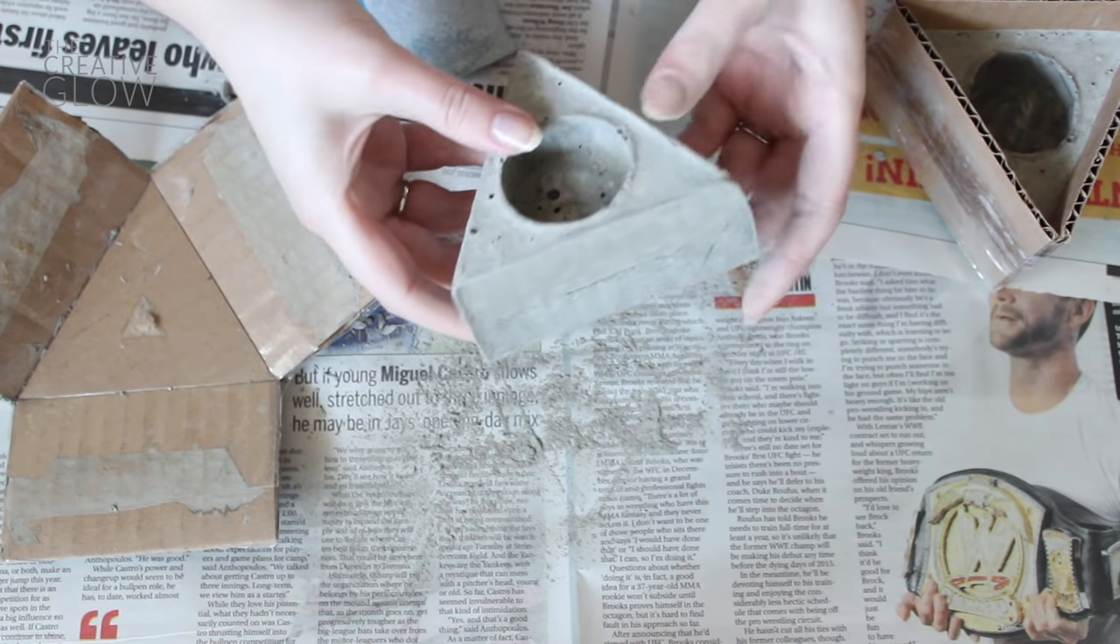Once it's nice and smooth you're just going to rinse it under some water to get rid of any of the dust that was created as well as any leftover cardboard. And now it's time to decorate. This is the really fun part. So you can get really creative if you like, you can do whatever you want.